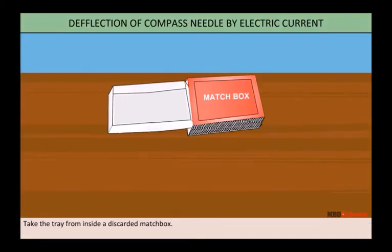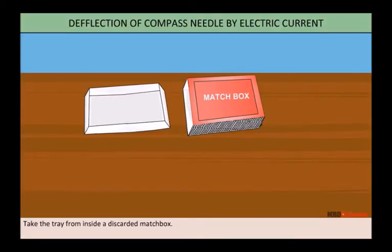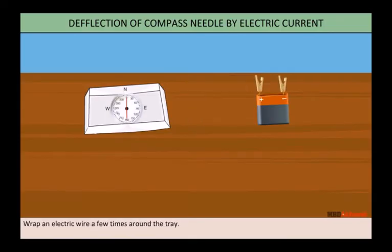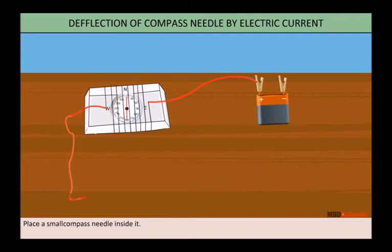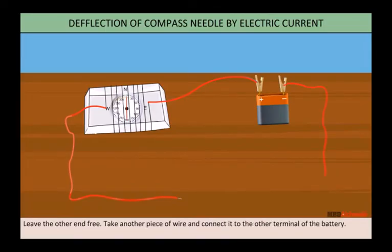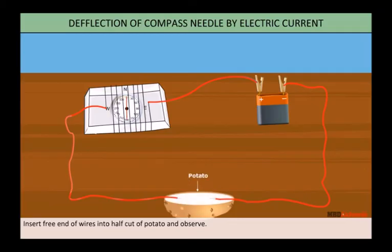Take the tray from inside a discarded matchbox. Wrap an electric wire a few times around the tray. Place a small compass needle inside it. Now, connect one free end of the wire to the terminal of a battery. Leave the other end free. Take another piece of wire and connect it to the other terminal of the battery. Insert the free ends of the wires into a half-cut potato and observe.